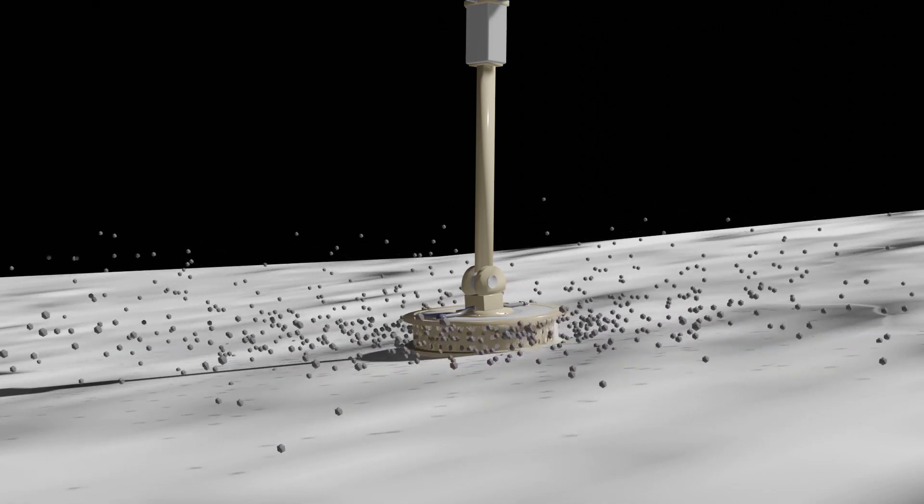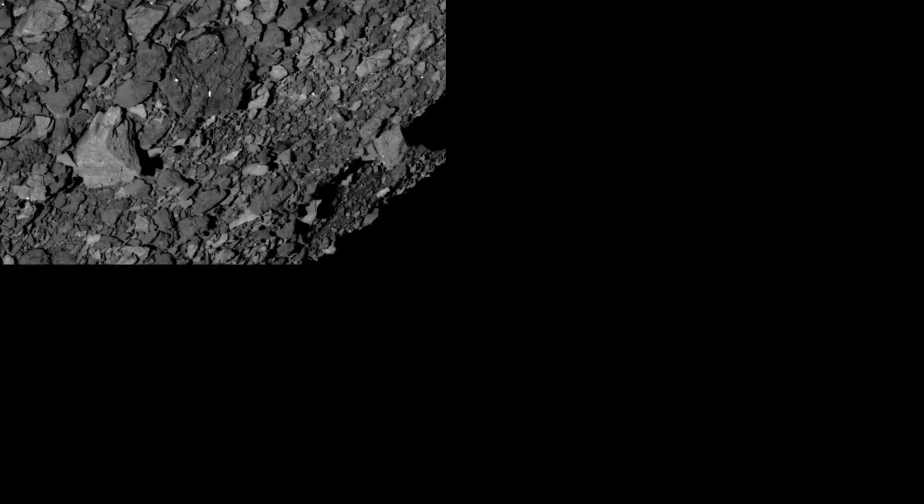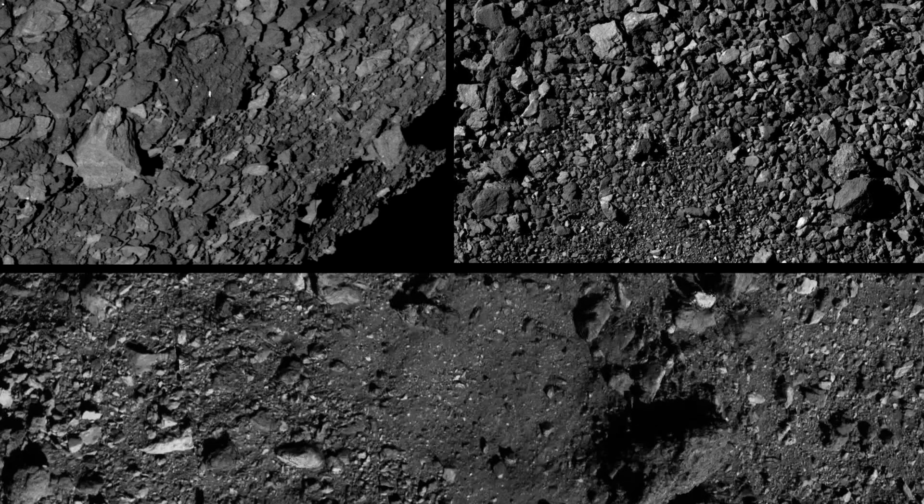In the case of OSIRIS-REx, it's finding a location that has the most diversity but also pristine material composition, a location that has particles that are about 100 micrometers in size. And most importantly, it's a location that's safe to land while the sample is being collected.